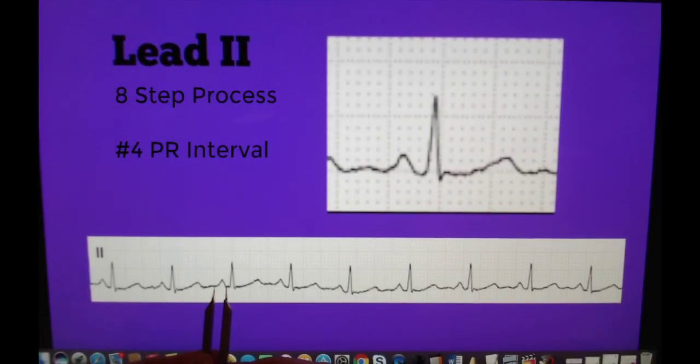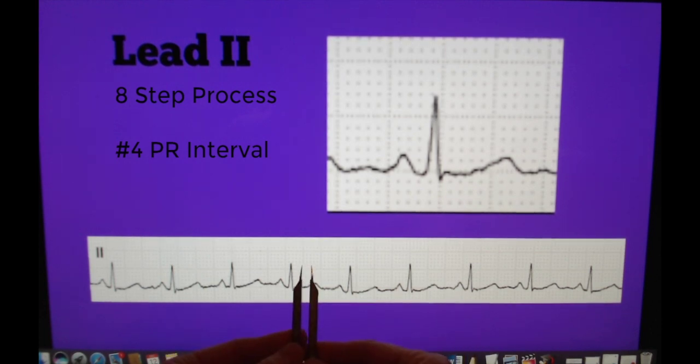Step four is measuring the PR interval. So again we are going to be taking our calipers and we are moving along all of the different waveforms in the six second strip. And for this strip we will calculate that out. We have two and a half small squares times by 0.04 second, which gives us the normal value of 0.10 second in duration.